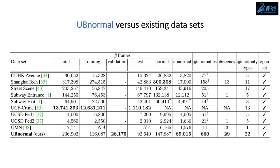In this table, we present the comparison between AbnormalCR and existing video anomaly detection datasets. In the open-set paradigm, AbnormalCR has the largest number of anomaly types, scenes, number of abnormal test frames, and anomalies. It is also the only dataset that provides a validation set.